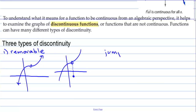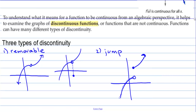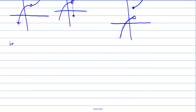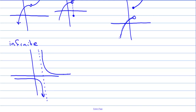We also have jump discontinuity, which we see with piecewise functions. One branch goes one way and another branch goes another, so as we go left to right the function jumps up to a new value and keeps going. The third type is infinite discontinuity, where the function goes to positive or negative infinity — that's where we have a vertical asymptote.